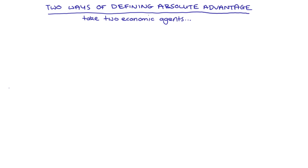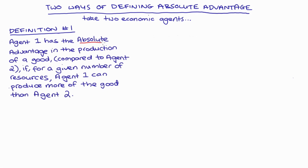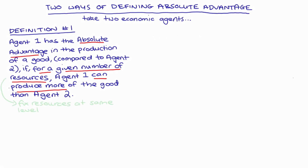We're going to take two economic agents — they could be people, firms, or countries — and I'll call this definition number one: agent one has an absolute advantage in the production of a good compared to agent two if, for a given number of resources, agent one can produce more of that good than agent two. When we say a given number of resources, we're fixing the amount of resources to be the same level for both agents, so everyone gets the same amount of resources to work with.